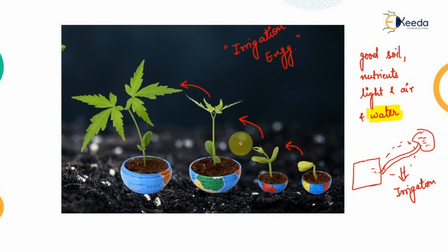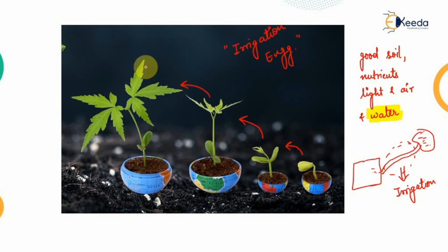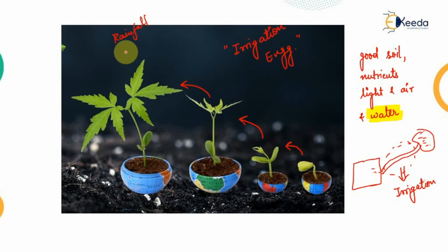The first question that comes to mind is why do we need irrigation, because there is a natural way to apply water to the plants. What is that natural way? Obviously you must be aware of rainfall — the natural dropping of water droplets is known as rainfall. So if we have rainfall, why do we need irrigation?